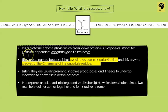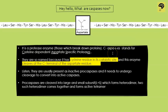Caspases are proteases. A protease is an enzyme that cleaves or breaks down proteins. A protein is formed of different amino acids — there are 20 different amino acids that come in different combinations to form a protein. This particular protease enzyme, caspase, is somewhat special and we'll learn why. The full form of caspase is: cysteine-dependent aspartate-specific protease.